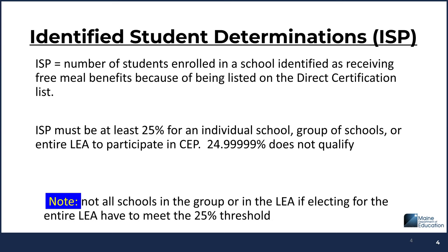The Identified Student Percentage, or ISP, is the number of students enrolled in a school identified as receiving free meal benefits because of being listed on the direct certification list. This year, the ISP must be at least 25% for an individual school, group of schools, or entire LEA to participate in CEP. This 25% is unrounded — meaning if you do the math and come up to 24.999%, you do not qualify. If you're grouping together the entire district, as long as the total is above the 25% threshold, you can participate. I'll show an example where one school doesn't qualify at 25%, but with grouping of everyone, it does.